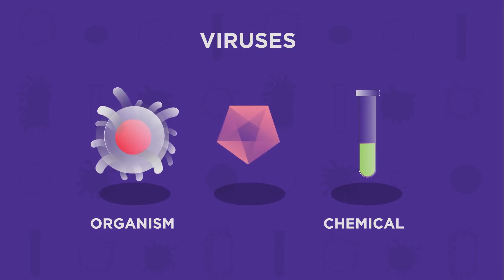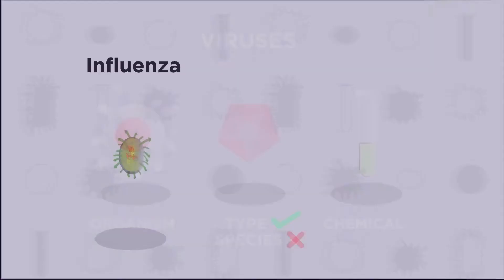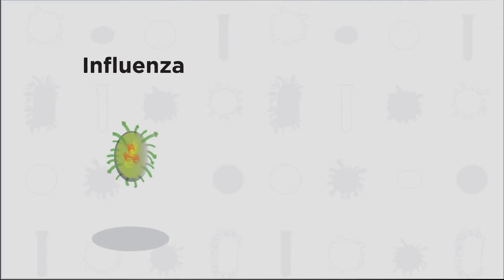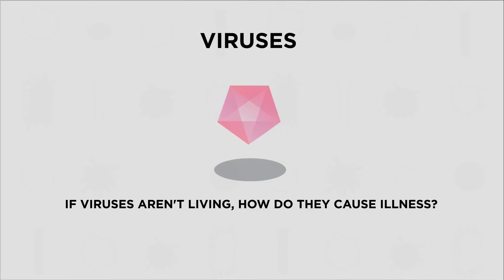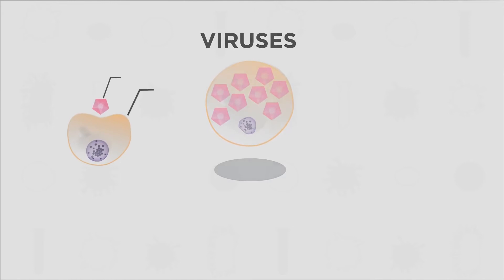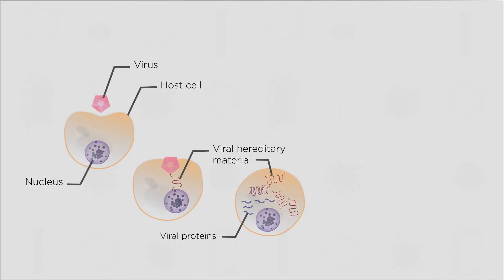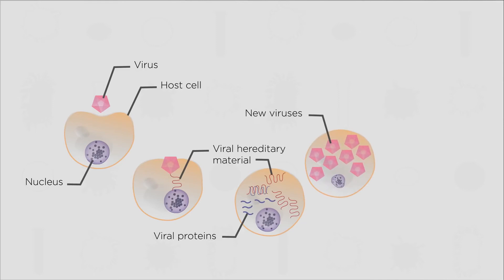Some common types of viruses are influenza and HIV or AIDS. So if viruses aren't living, how do they cause illness? Viruses are parasites — they can only reproduce in other living cells. They enter a host cell and hijack the host's genetic machinery. They make copies of their own viral genetic material instead and produce lots more virus particles. After lots of virus particles have been made, the host cell dies and the viral particles are released to infect more cells.